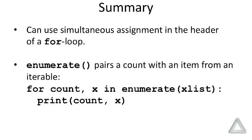we discussed the enumerate function that pairs a count with an item from an iterable. Here's an example where we use simultaneous assignment to assign the two items that enumerate returns in the form of a tuple to the identifiers count and x. Then in the body of the for loop,